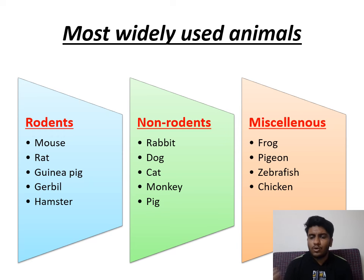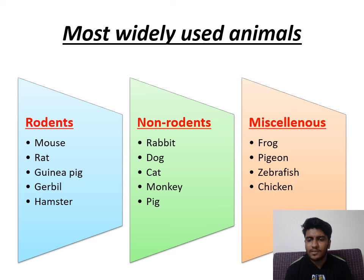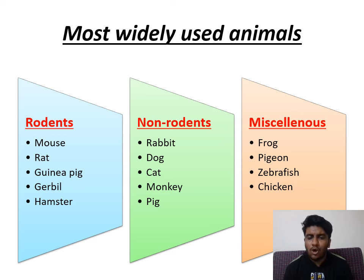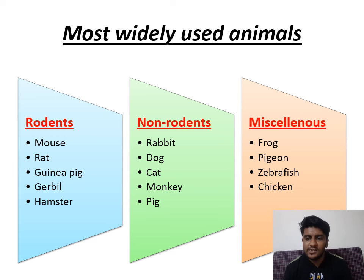The most widely used experimental animals are rodents, non-rodents, and miscellaneous animals like zebrafish, which is currently becoming very popular, as well as chicken, pigeon, and frog. Non-rodents include rabbit, dogs, monkeys, and pigs. Rodents include mice, rat, gerbil, guinea pigs, and hamster. Chinese hamster ovary is widely used. In guinea pigs, the ileum is mostly used.